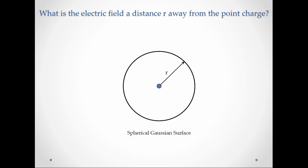The first thing we need to do is draw a Gaussian surface. So you'll notice I've drawn in a spherical Gaussian surface. Now why did I choose a sphere? You'll see later in the problem that the choice of a sphere makes the math a lot easier.